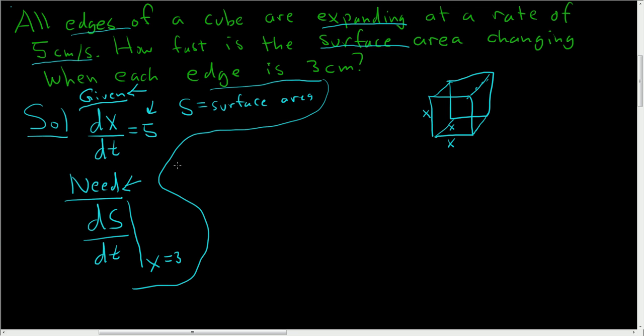Okay, so we need a formula for the surface area. A cube has 6 sides, and each side has the same width and length. So the area of one side is length times width, x times x, which is x squared. Since there's 6 sides, the surface area should be 6x squared. All right, we're ready to continue.